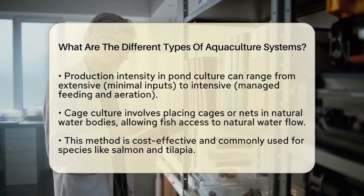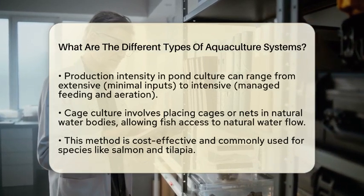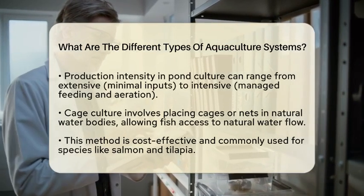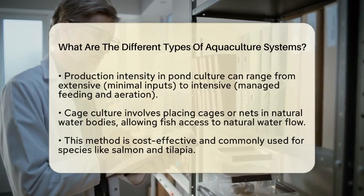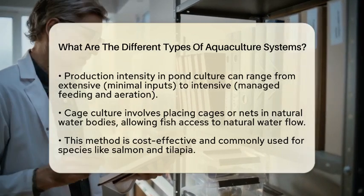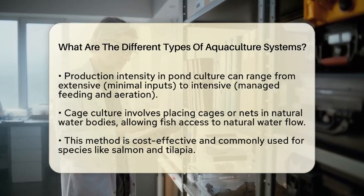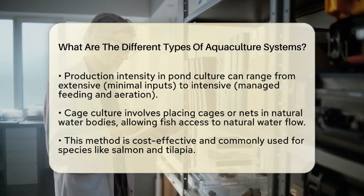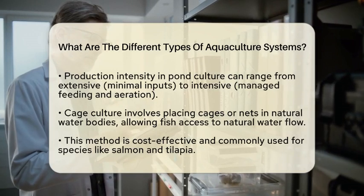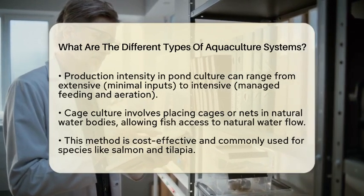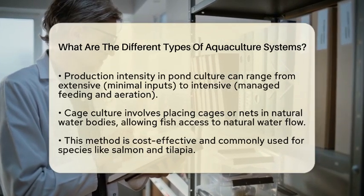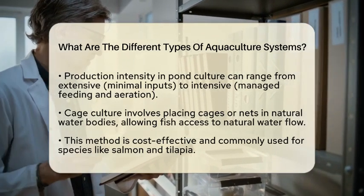Next up is cage culture. This method involves placing cages or nets in natural water bodies like lakes or coastal areas. The fish are enclosed but still have access to natural water flow. This system is easy to manage and is often used for species like salmon and tilapia. It is a cost-effective way to farm fish without needing to modify the environment significantly.